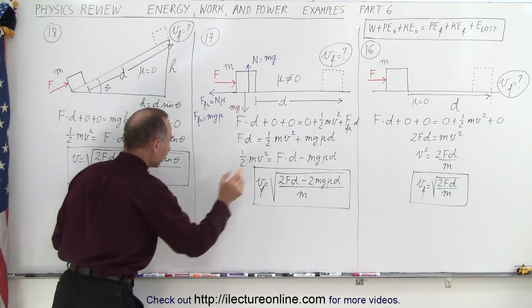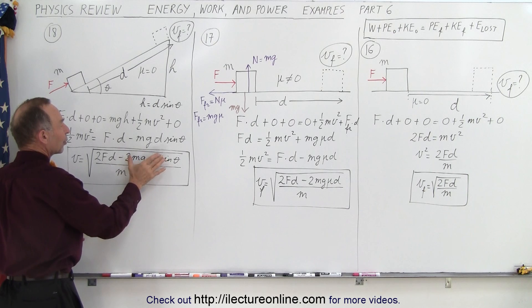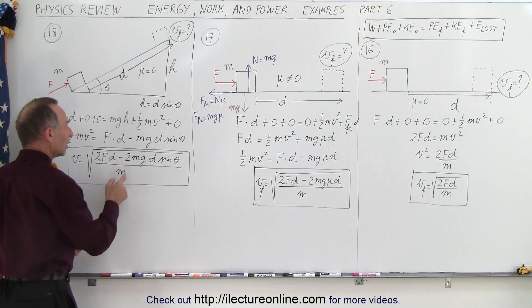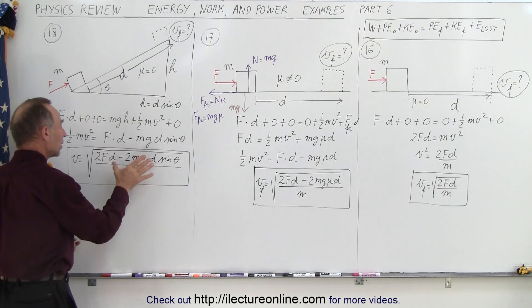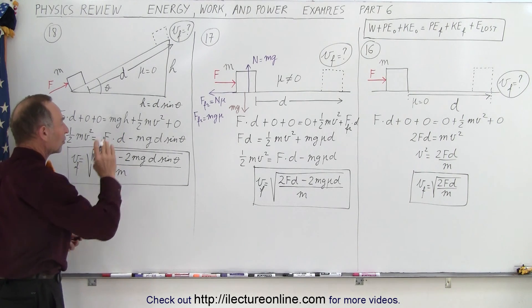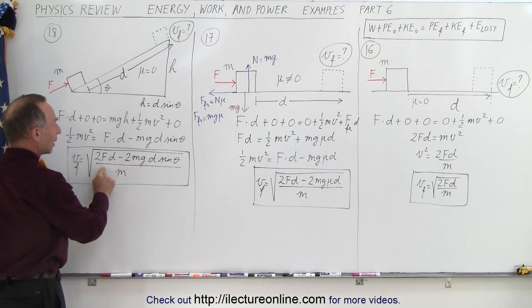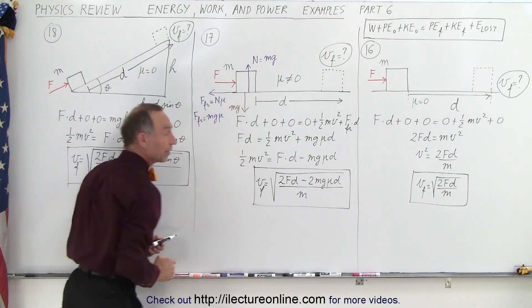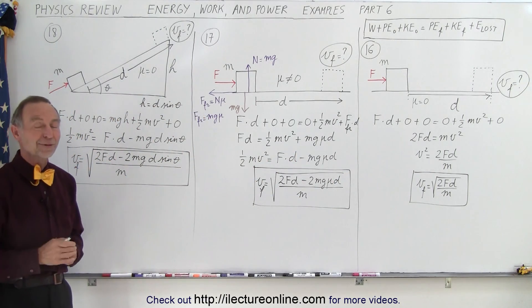which is what we have over there and there, but now we also have to account for the additional potential energy gained, 2mgd sine theta divided by m. Take the square root of that, and that is how the final velocity has changed compared to if we hadn't gained any height. No height gained, we get back what we have over there. No friction, we get back what we have over there, and that is how it's done.